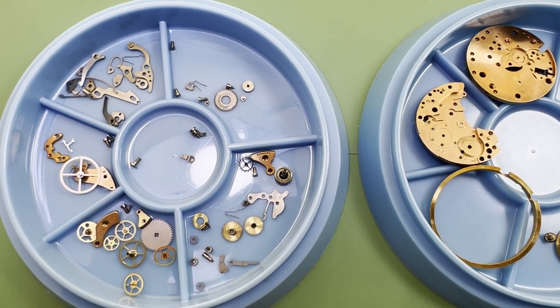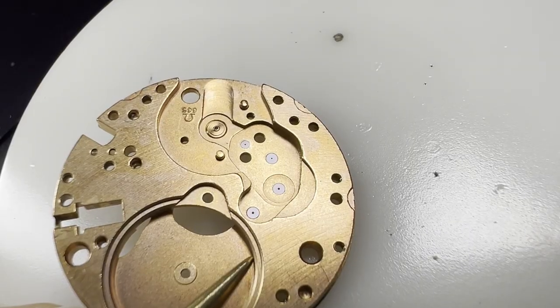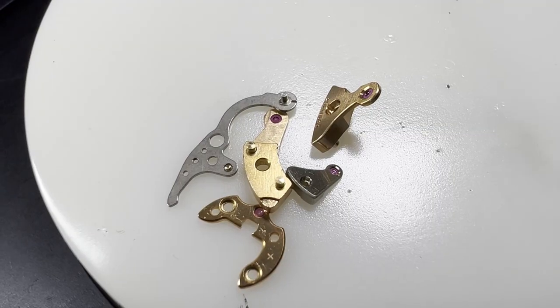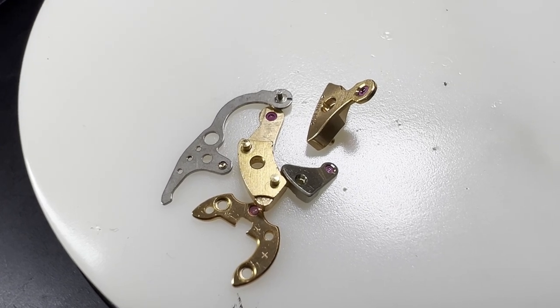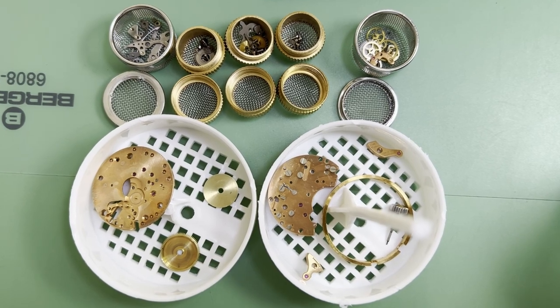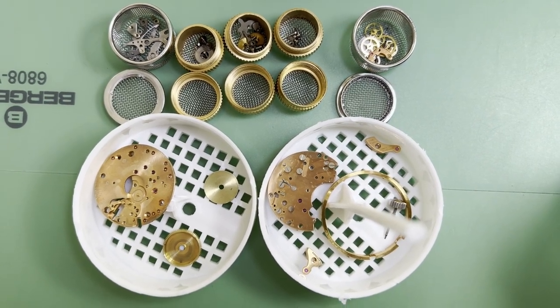There we go, the whole movement fully taken apart. Before the parts are cleaned in the ultrasonic, the jewels on the main plate and bridges are pegged out, as well as any loose oil and debris being removed. Then all the parts are cleaned in four stages of ultrasonic baths, except for the balance and pallet forks that are cleaned manually.